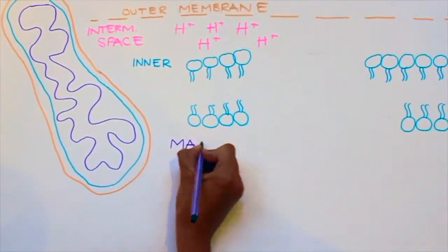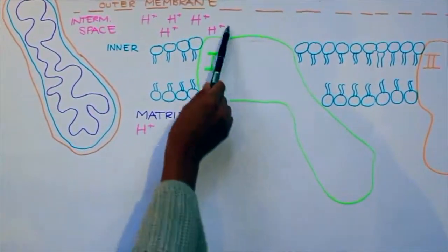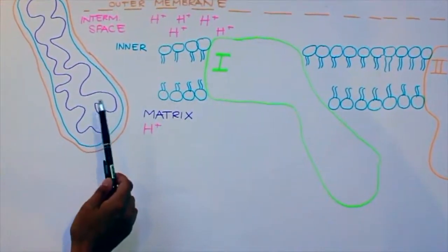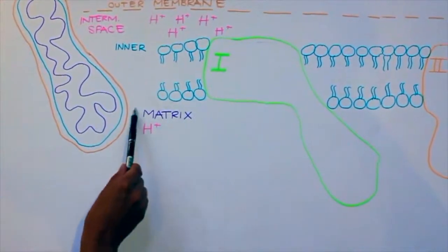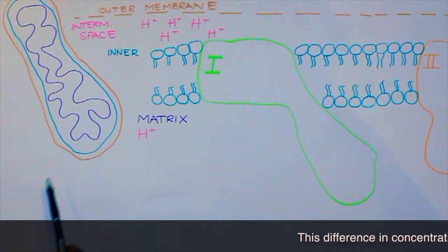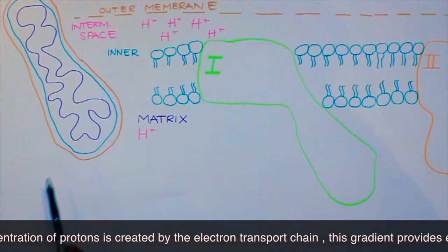Within the inner membrane, there is a matrix with few protons. There is a high proton concentration in the intermembrane space, giving it a low pH, as opposed to the matrix which has a low proton concentration. This difference in concentration of protons is created by the electron transport chain.